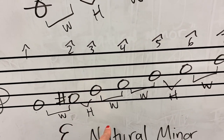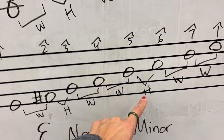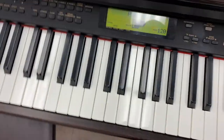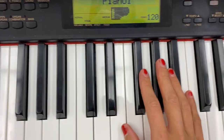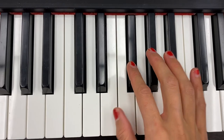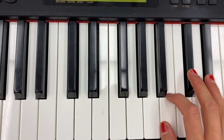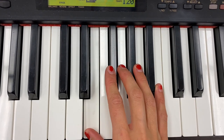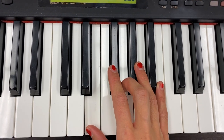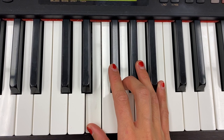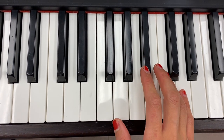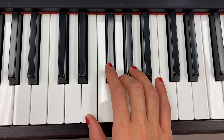The pattern is: whole step, half step, whole step, whole step, half step, whole step, whole step. E major looks like this, and if I do natural minor, I'm lowering the third, the sixth, and the seventh degrees — so it sounds like this.